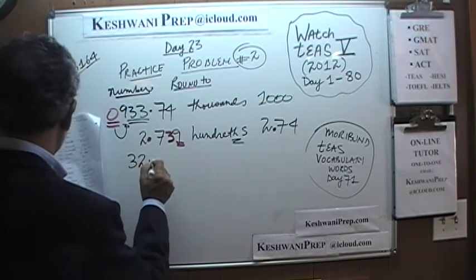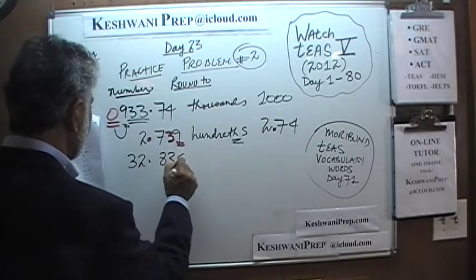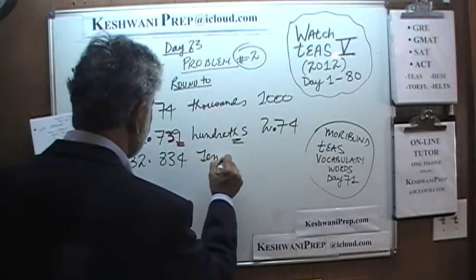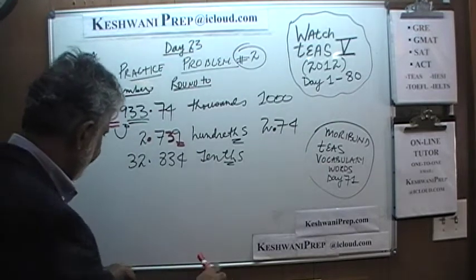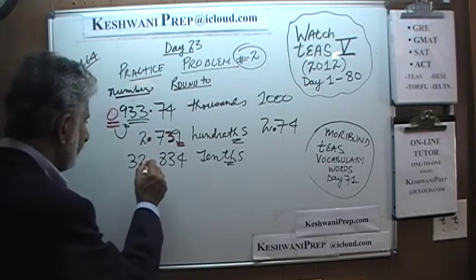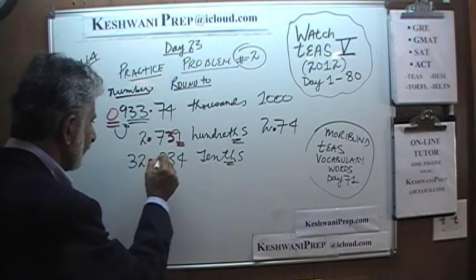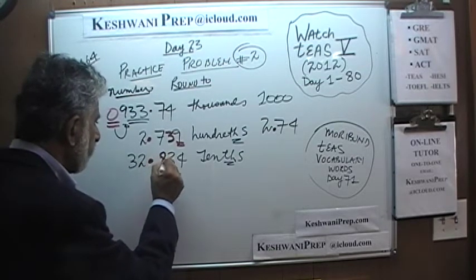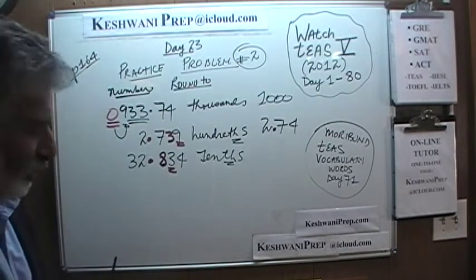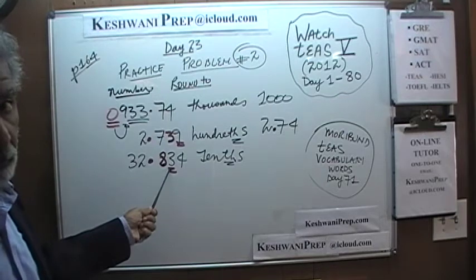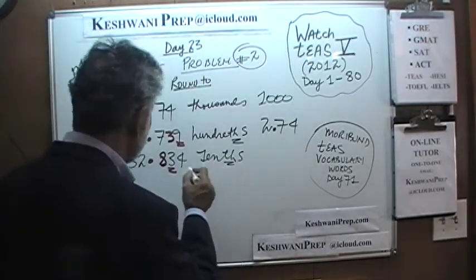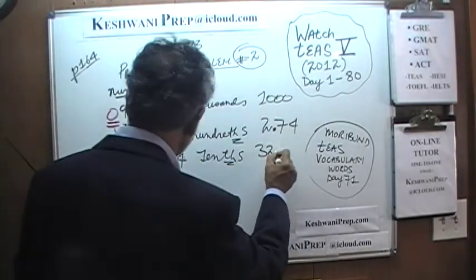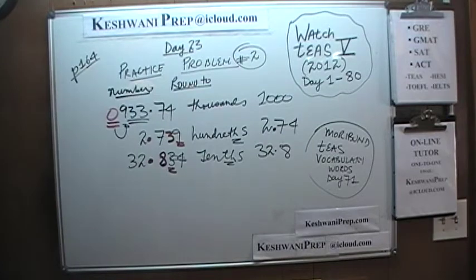Next: 32.834, rounded to the nearest tenth. What is the tenth digit? There is our decimal and this is our tenth digit right here. We look at just one digit to the right. Is it five or more? The answer is no, it is not five or more. Since it is not, we just ignore it and everything drops out. It is just going to become 32.8.